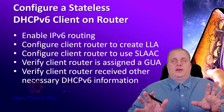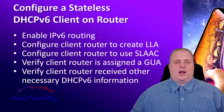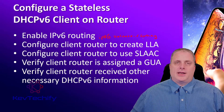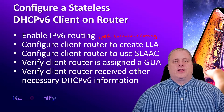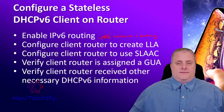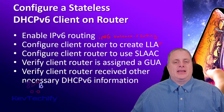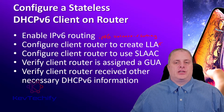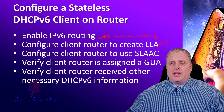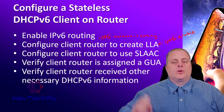You can set your router up to be a DHCP version 6 client in a stateless version. First, we enable routing with IPv6 unicast-routing — not enabled by default, you have to turn it on. Then, you have to configure the client router to create an LLA, a link-local address, on the interface that's going to be the client. The command to generate that link-local address is IPv6 enable on the interface.